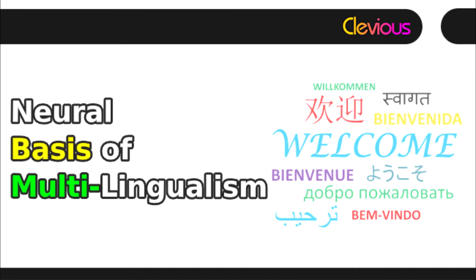In contrast, another theory claims that the processing of L2 acquired late in life depends upon different cognitive mechanisms and cerebral structures from L1 (Ullmann, 2001). In this regard, L2 grammatical knowledge is declarative while L1 is implicit, whereas both L1 and L2 are declarative for lexical knowledge. Since implicit and declarative knowledge are mediated by distinct neural systems — left frontal basal ganglia and left temporal areas respectively — this differential hypothesis claims that late L2 acquisition cannot depend on the same brain mechanisms used for L1 (Ullmann, 2001).